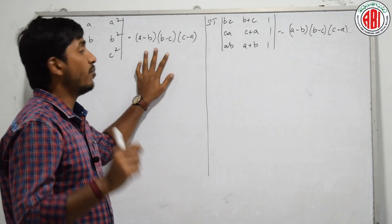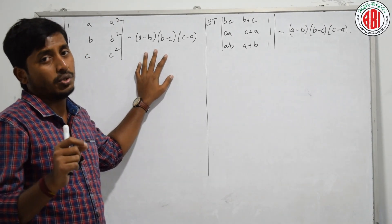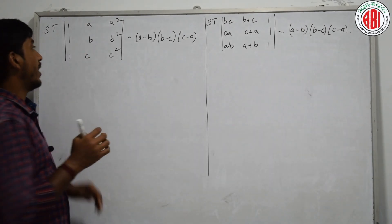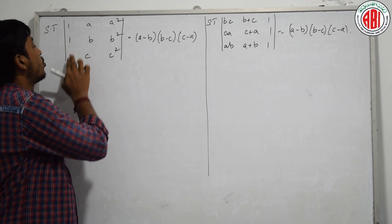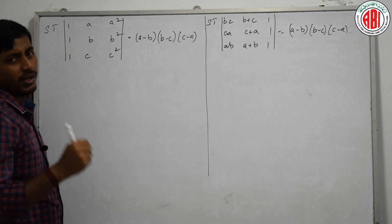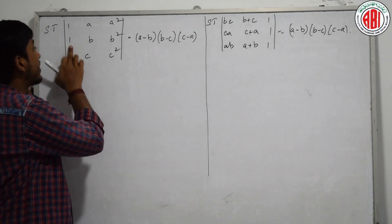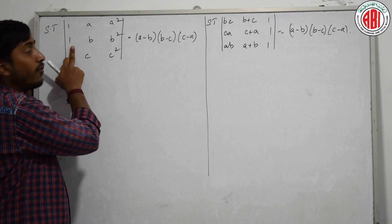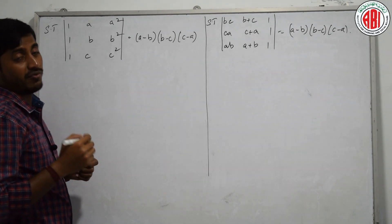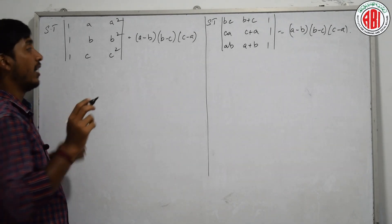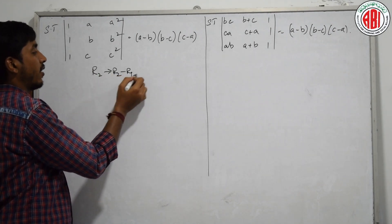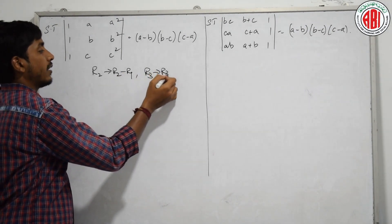Shall we do? The most popular row operations which we are going to use - remember, whenever we solve the determinant, make sure that these two elements have to be made zero. Try to remember like that. Subtract first row from second and third. Those are the most popular row operations we use in almost all the problems. That is, use R2 tends to R2 minus R1 and R3 tends to R3 minus R1.